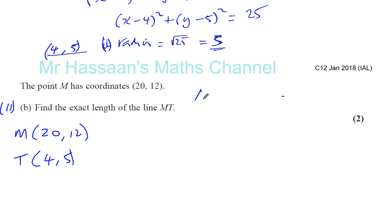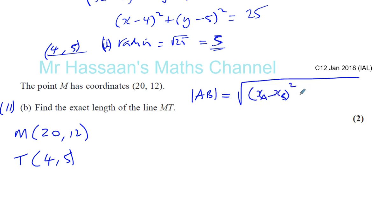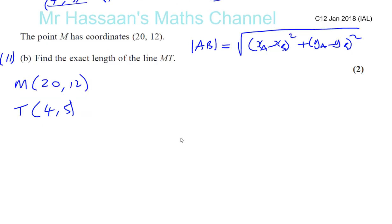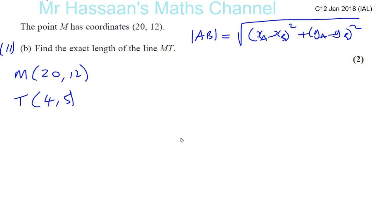Most people would have memorized this particular formula — the length formula. The length between two points A and B is equal to the square root of (XA minus XB) squared plus (YA minus YB) squared, or (X1 minus X2) squared plus (Y1 minus Y2) squared. Many people know how to answer this question: just plug those into the formula and get your answer.